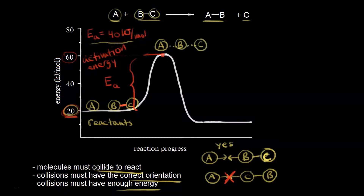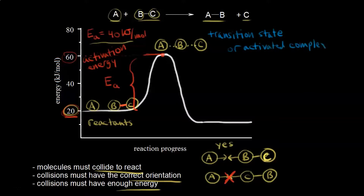The activation energy is the minimum amount of energy required to initiate a chemical reaction — the energy of the collision must be greater than or equal to Eₐ. At the top of the energy diagram we get a transitional structure: a bond is forming between A and B at the same time a bond is breaking between B and C. This is called the transition state, also known as the activated complex, shown with partial bonds.